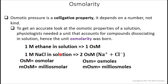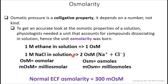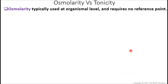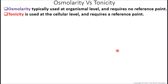Here are the units you might encounter: OsM is osmolar; Osm is osmoles; mOsM is milliosmolar (10⁻³ osmolar); and mOsm is milliosmoles. The normal extracellular fluid osmolarity is 300 milliosmoles — and since it's extracellular fluid, that's also vasculature osmolarity. We should also distinguish osmolarity from tonicity. Osmolarity is typically used at the organismal level and requires no reference point. Tonicity is used at the cellular level and refers to the relative ability of a solution to move water into or out of a cell.